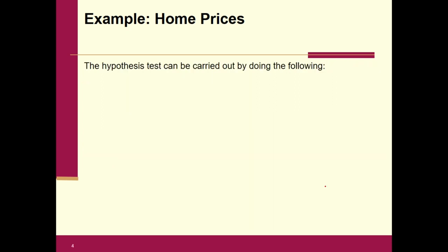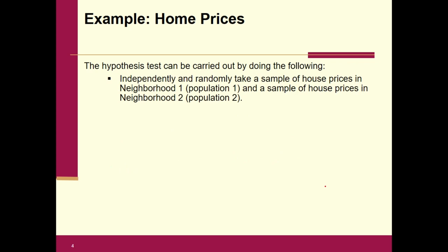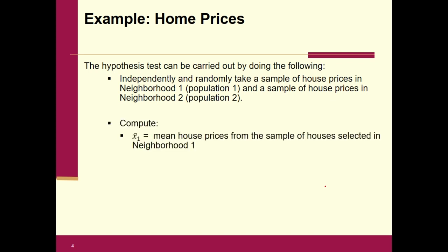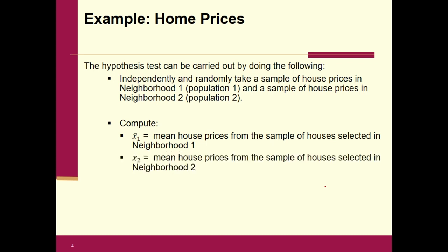The hypothesis test is carried out by independently and randomly taking a sample from the first group and doing the same from the second group. We collect the house prices and compute x-bar one — the mean house price from the sample from neighborhood one — and x-bar two. We'd look at, say, 50 houses, calculate the mean, and that would be x-bar one. We'd also calculate s one and s two.